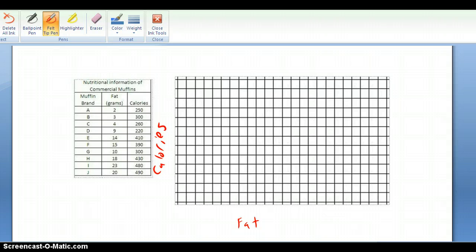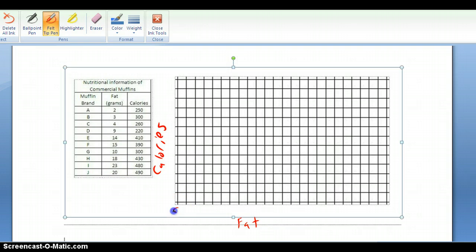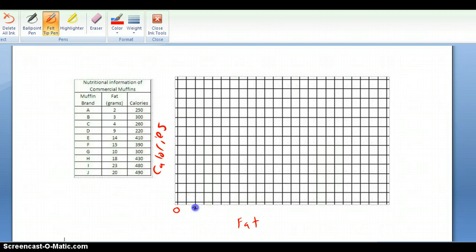I need to basically choose an appropriate scale. Since my bottom scale here has 24 sections and my highest value goes up to 23, I can make each one of these 1, so I can start here at 0, and then I won't have to write them all out, but I'll do every 2.